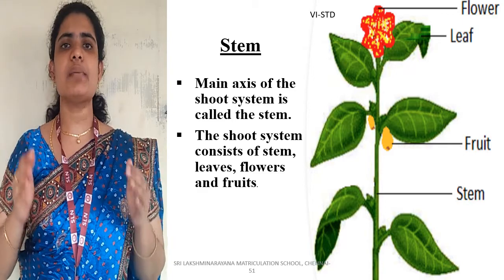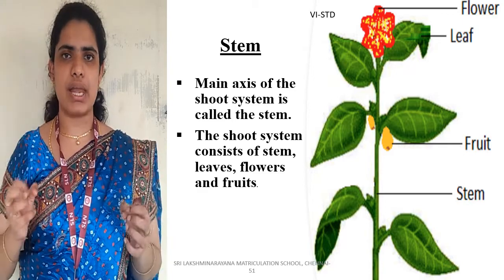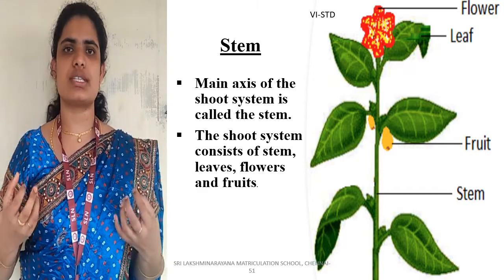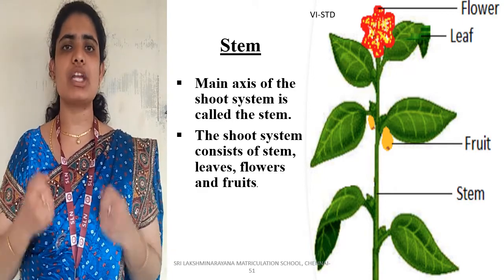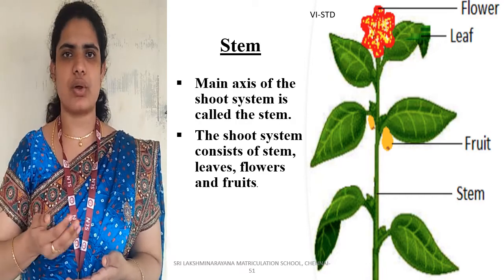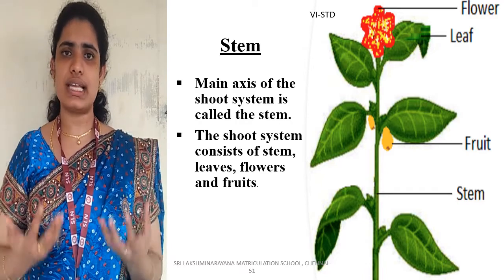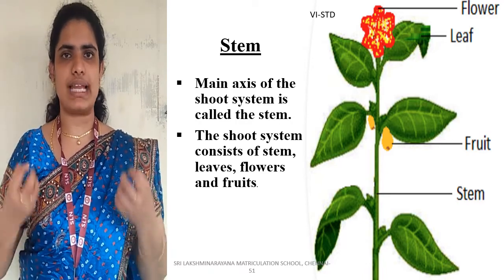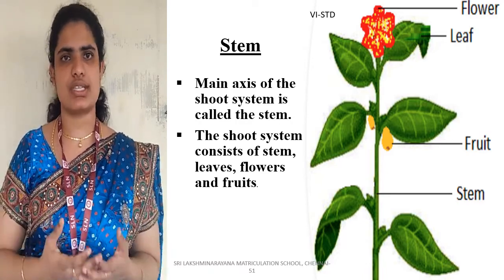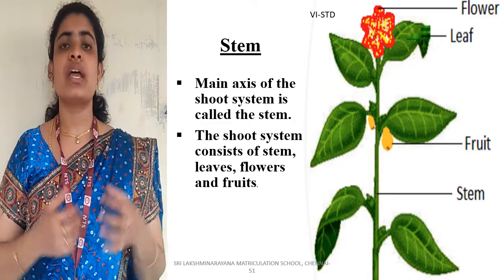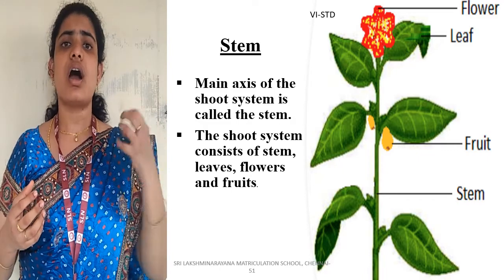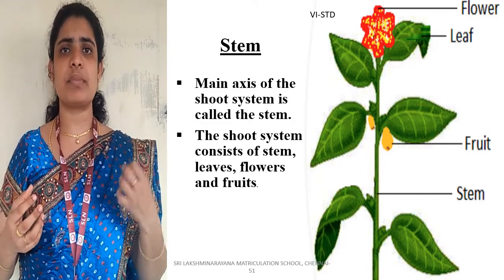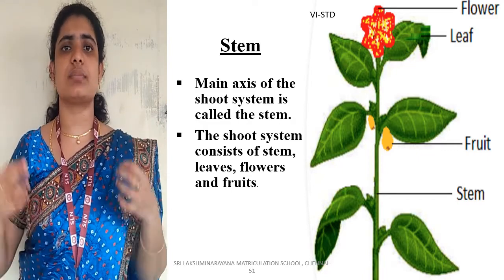The aerial part of the plant that is present above the ground is known as the shoot system. Next, let us see what are the parts that come under the shoot system.